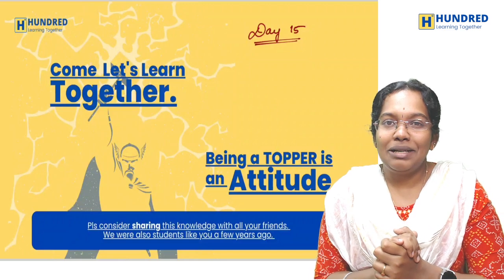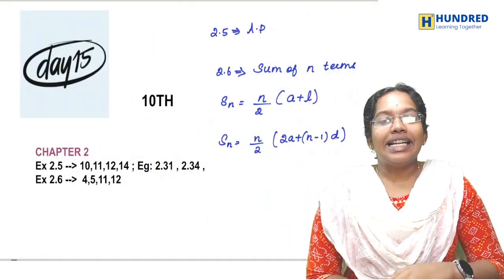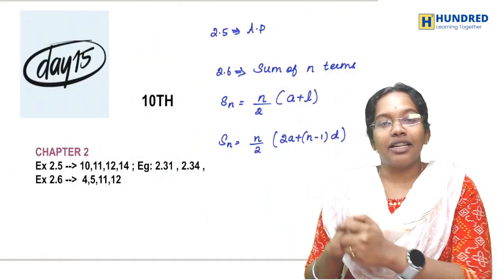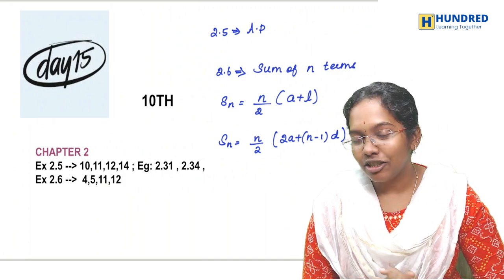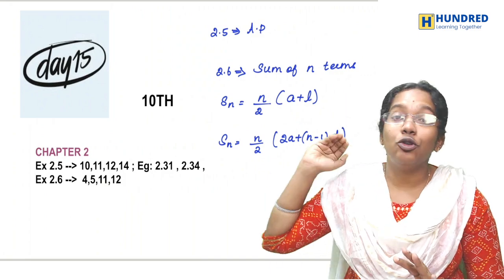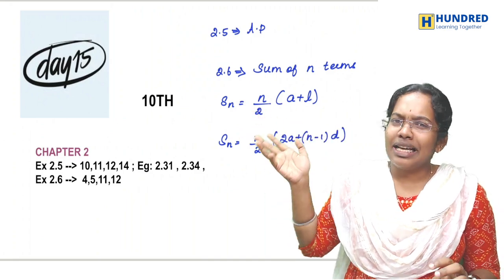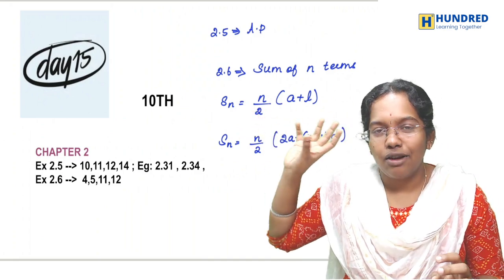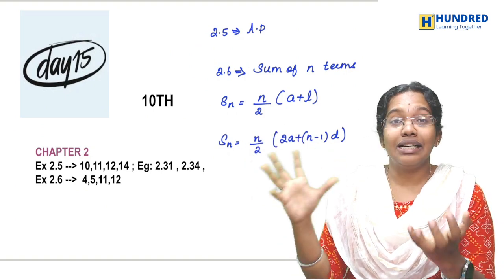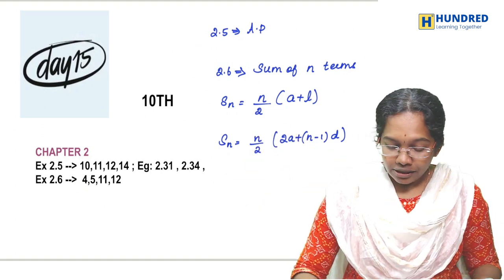Today's targets for 10th: Exercise 2.5 has some remaining sums and 2 points about sum to n terms. For sum to n terms, you know the formula, so using that formula, complete all the sums. That's your today's target.